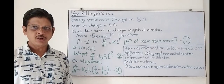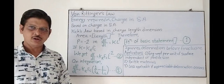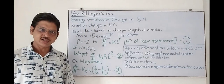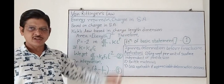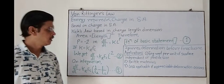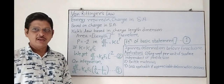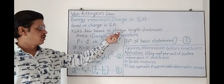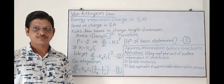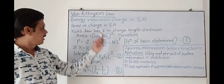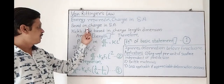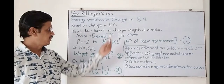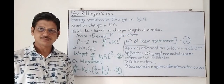Now let's try to understand Rittinger's law. As per this law, the energy required for size reduction is directly proportional to the change in surface area. This law is based on change in surface area, whereas Kick's law is based on change in length dimension. Note this difference: Rittinger's law is based on change in surface area; Kick's law is based on change in length dimension.